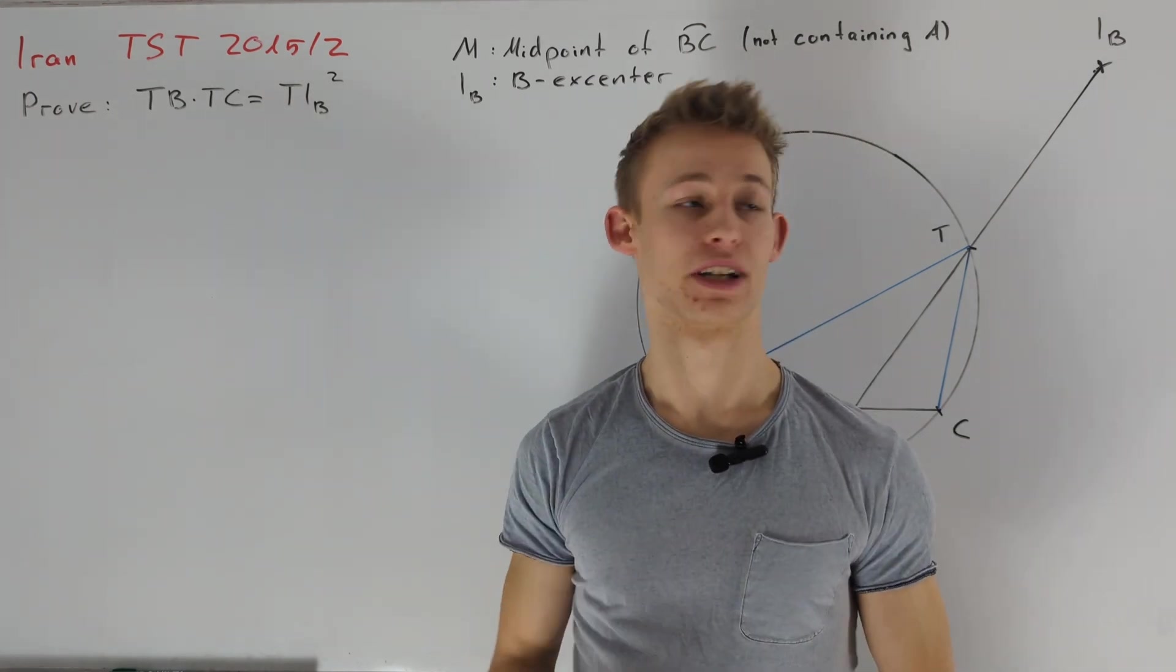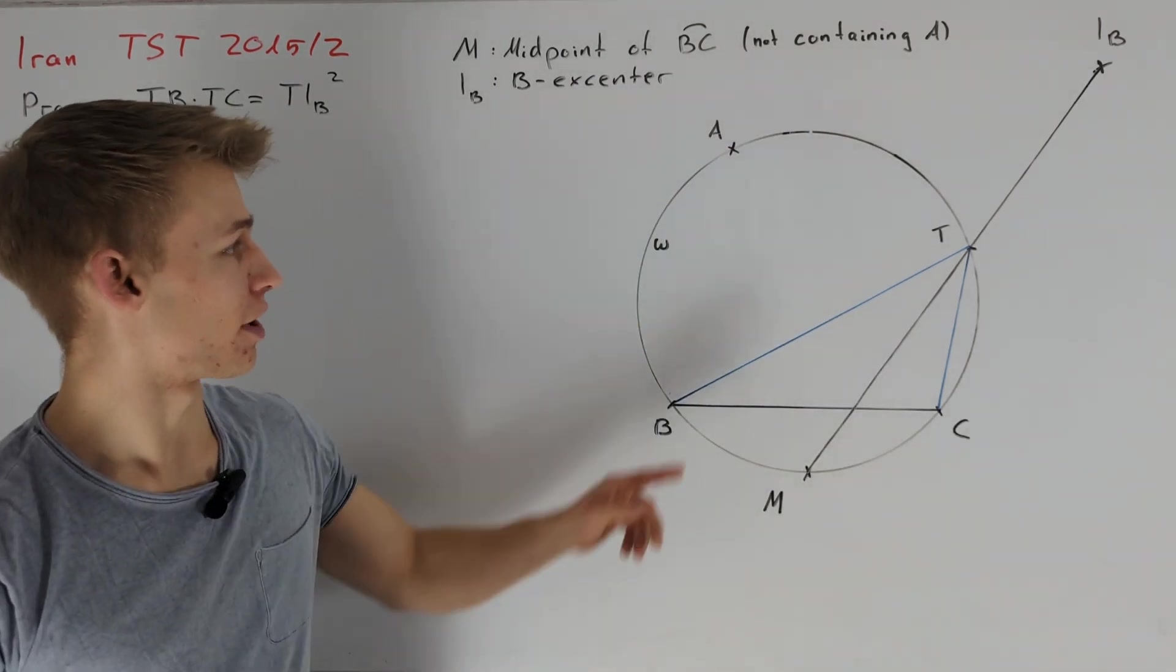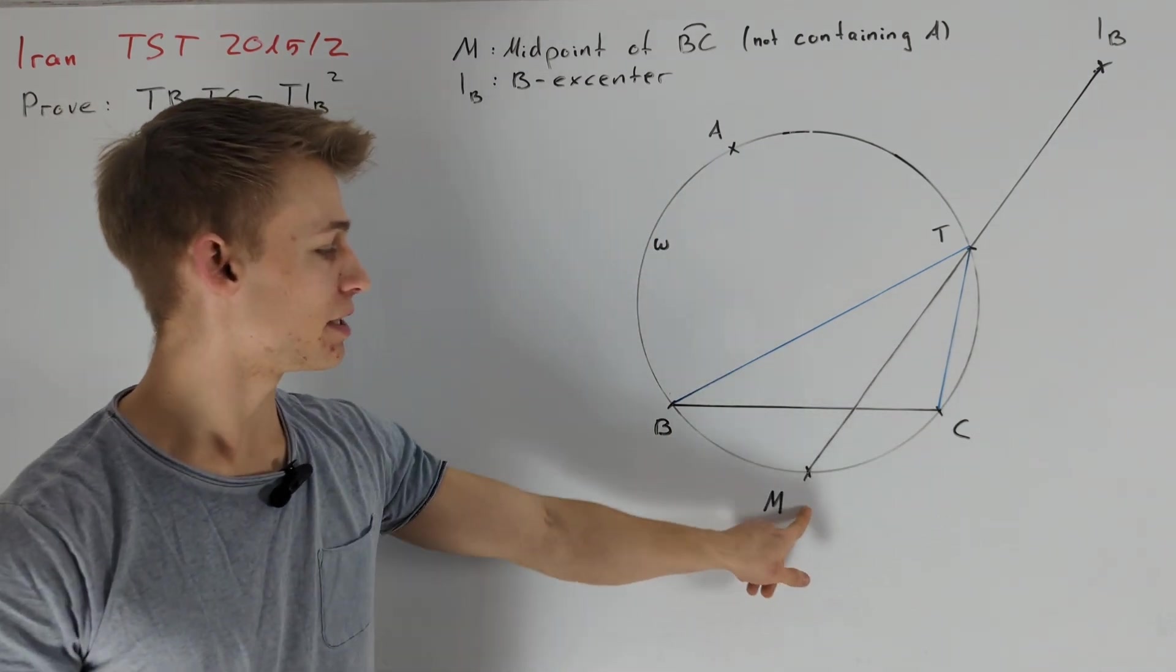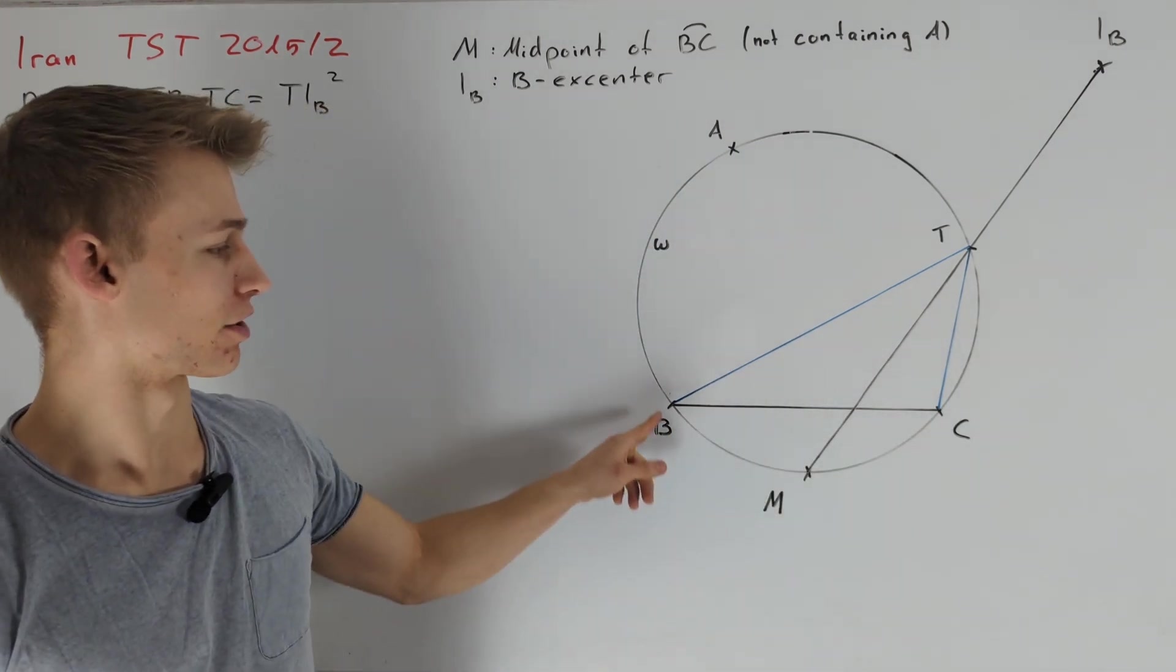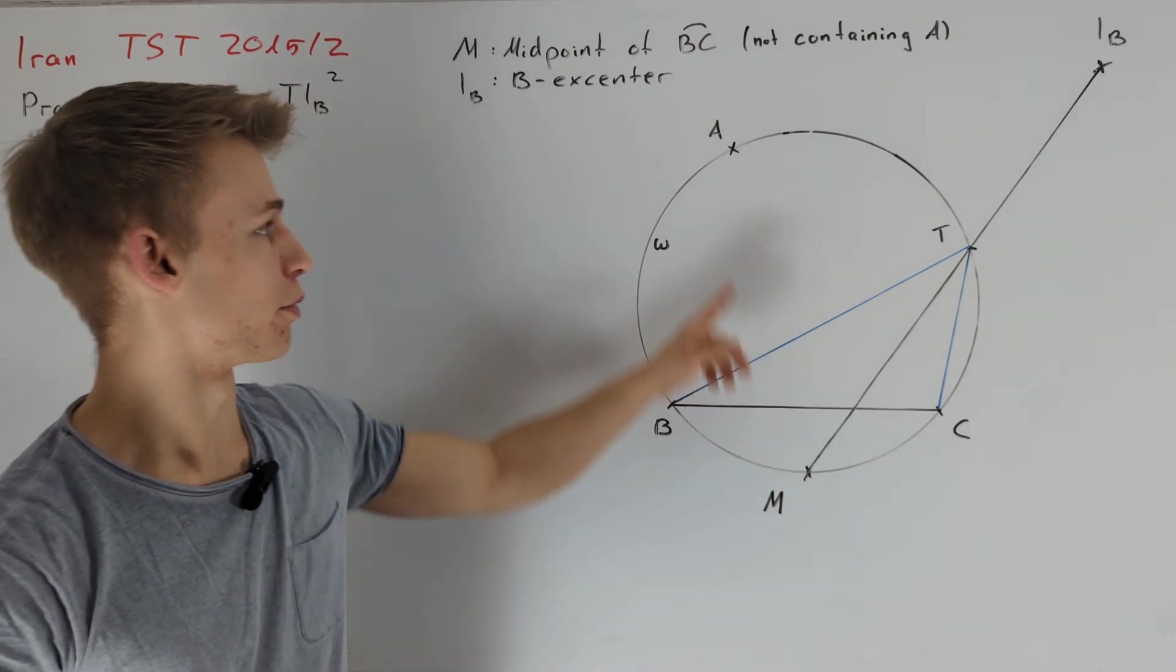At first, let's take a look at the picture. We have given a triangle ABC. Point M is defined to be the midpoint of arc BC, not containing the point A.